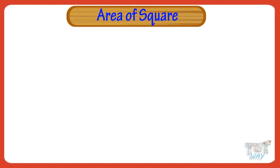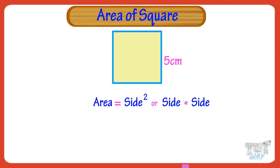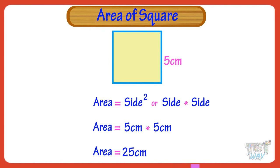Now, let's learn how we find the area of a square. Here we have a square with its side mentioned. It is 5 cm. The formula for finding area of a square is side squared, or side multiplied by side. So, area of this square equals 5 multiplied by 5, equals 25 cm square.